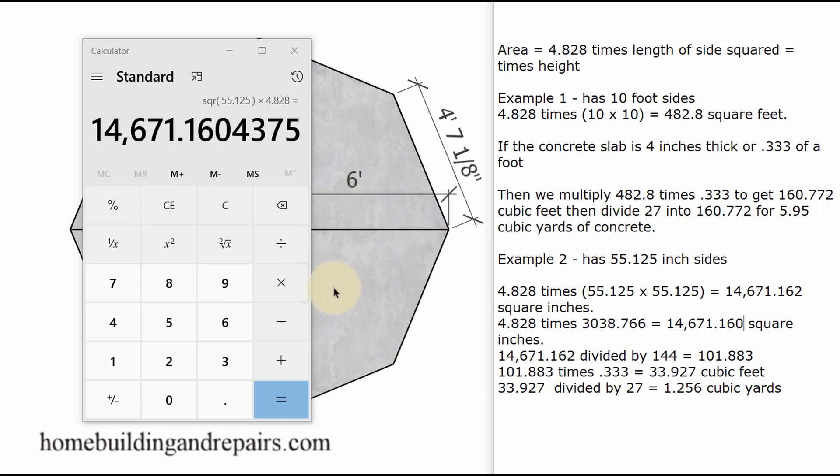Remember, we're dealing with surface area. Then we are simply going to divide this by 144 to get 101.883 square feet. So now that we have it converted to square feet, we can do the same thing we did up here. And that would be to multiply this number times 0.33 to get 33.927 cubic feet.